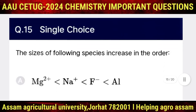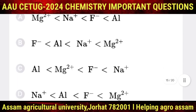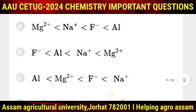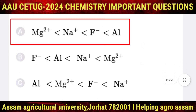Question number 15: the sizes of the following species in increasing order — the correct option is A: Mg2+ < Na+ < F- < Al.